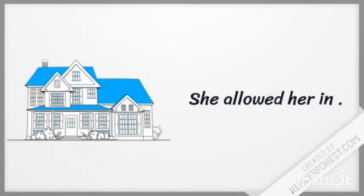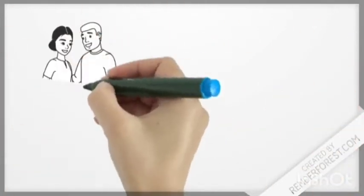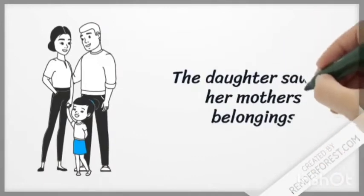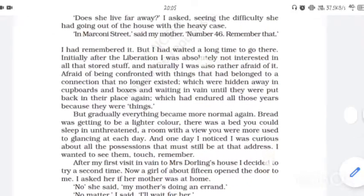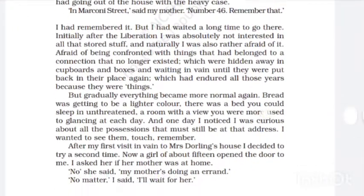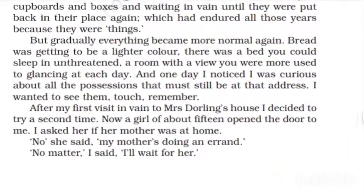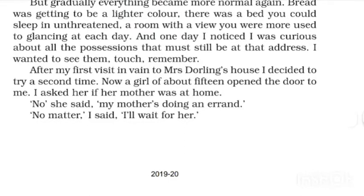Mrs. S's daughter — the narrator of the story — was now inside the house. She could see all the things, all her mother's belongings, and she was becoming emotional. Now, after the first visit in vain to Mrs. Darling's house, the girl decided to go a second time. A girl of about 15 years opened the door and said, 'No, mother is not there. My mother's doing an errand' — meaning she went out for some purpose.